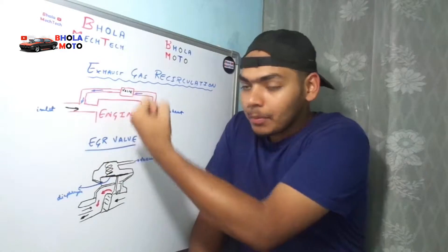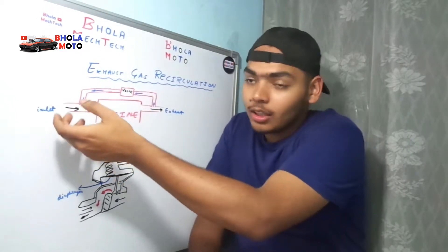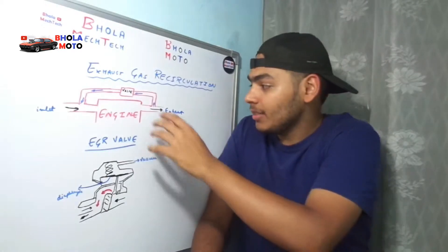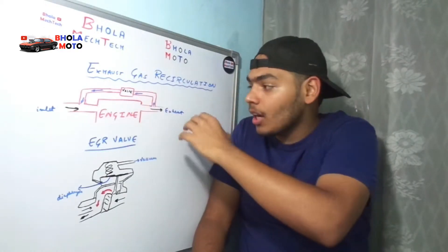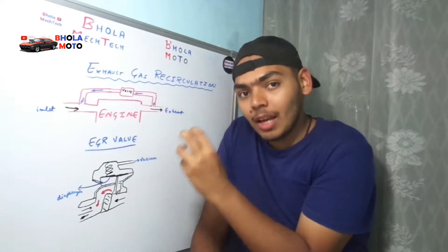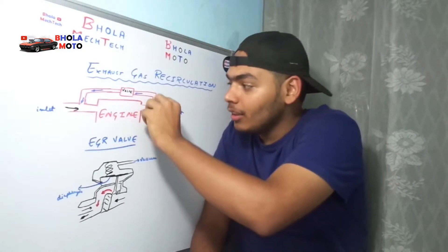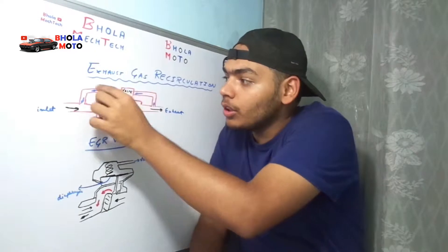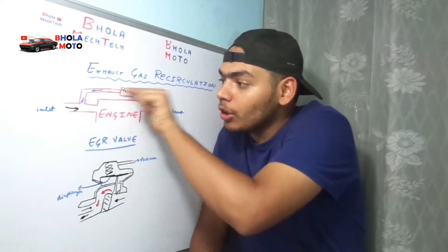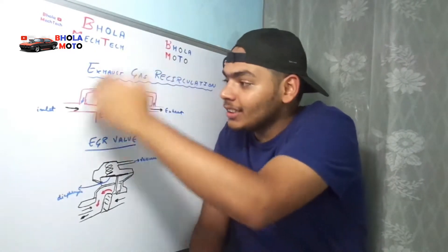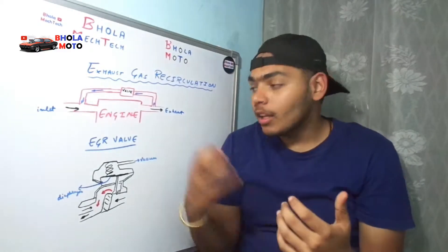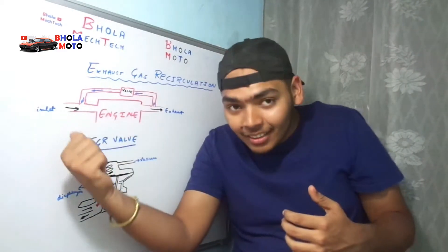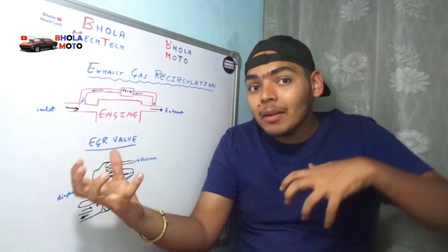This is the inlet valve. When the piston goes down it sucks the inlet air from here, and then after combustion it emits the exhaust gases. When these exhaust gases are coming out, a partial amount of these exhaust gases are going to enter through this port to this valve, and then this valve is going to push these exhaust gases inside the inlet manifold again. So a partial amount of these exhaust gases are going to be intake again by the engine.